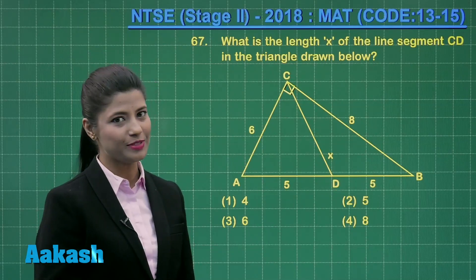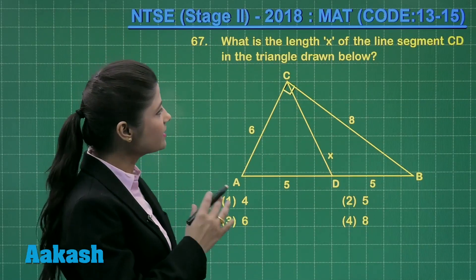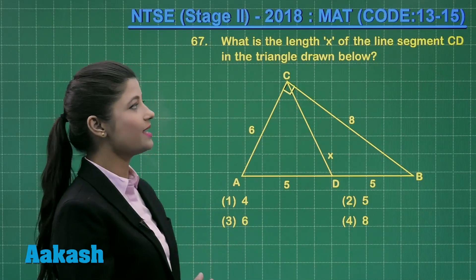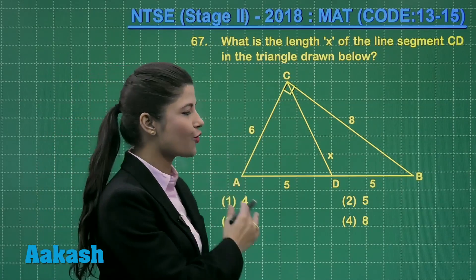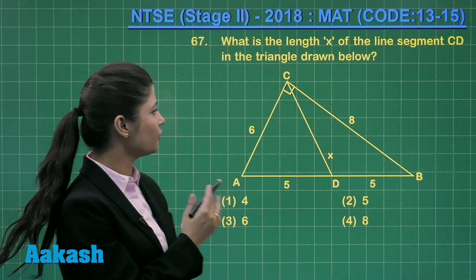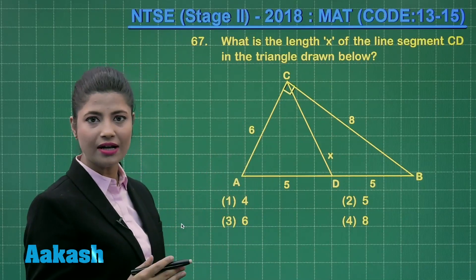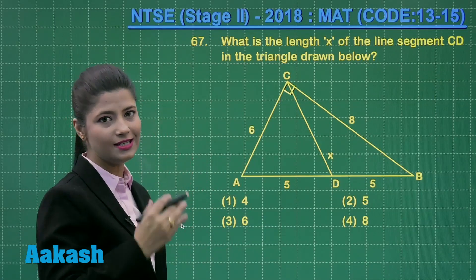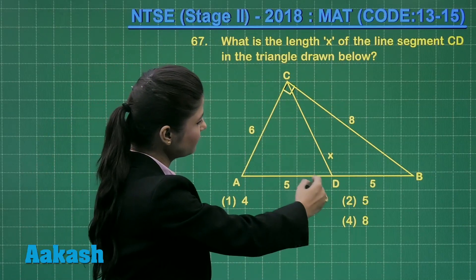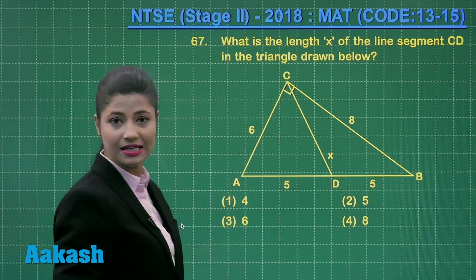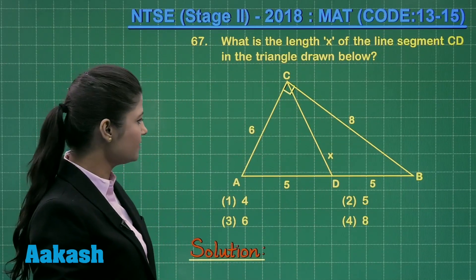Let us solve question number 67. It states: what is the length of x in the line segment CD? In the triangle drawn below, triangle ABC is a right angle triangle where angle C is 90 degrees. You need to obtain the length of this line segment CD which is considered as x.